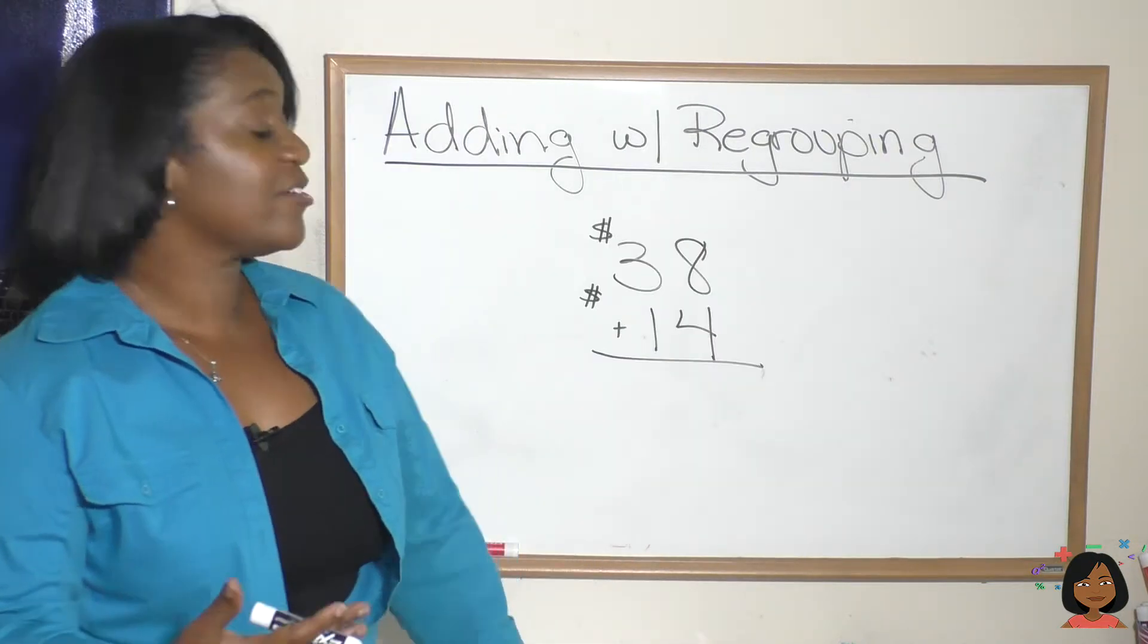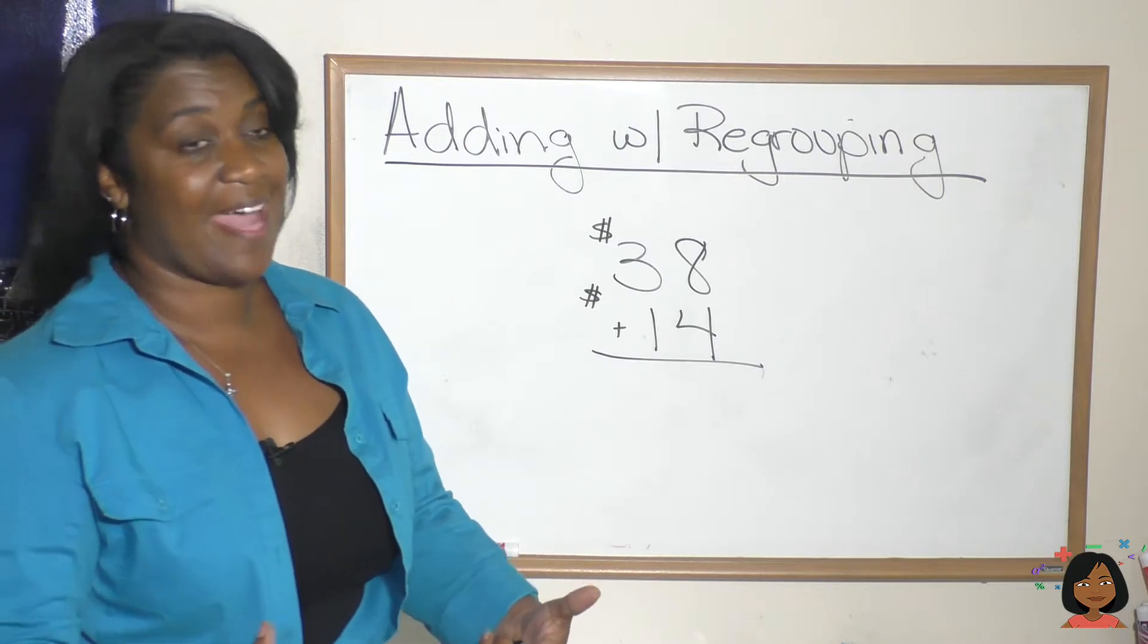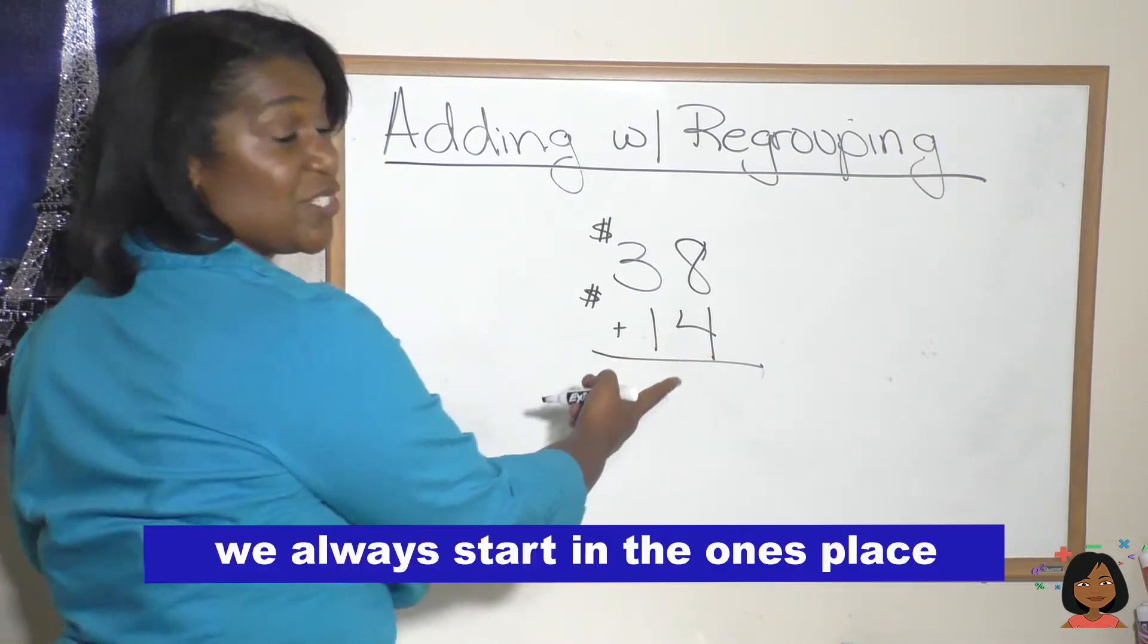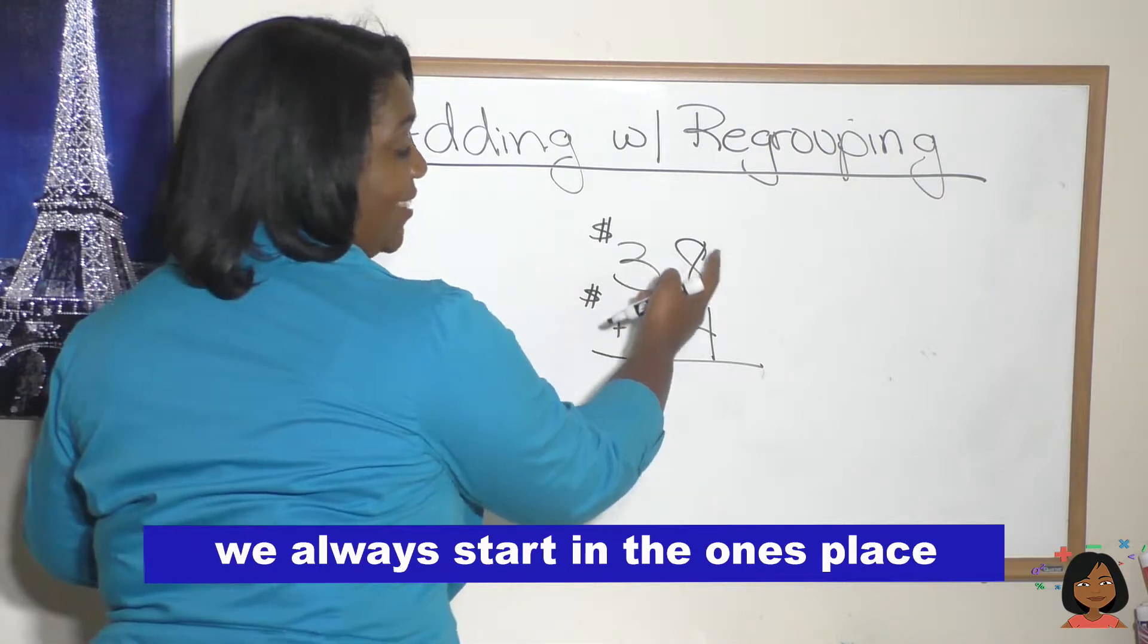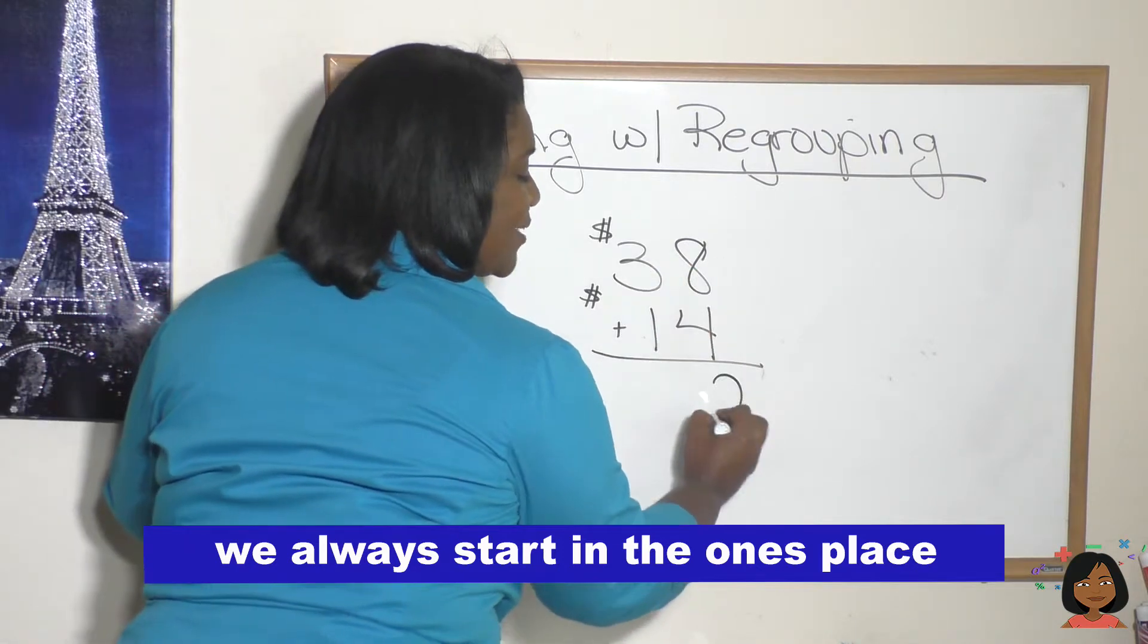We have thirty eight dollars and fourteen dollars. Let's add them. So we always start in the ones place. Eight plus four and we get twelve.